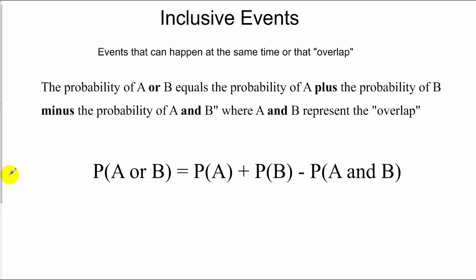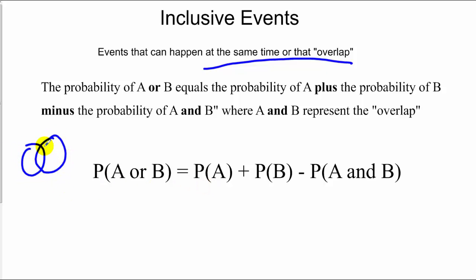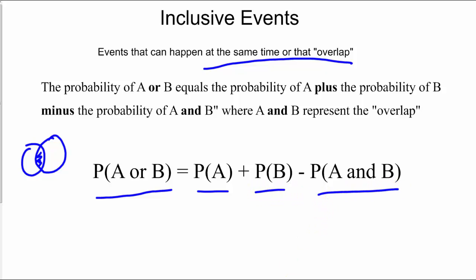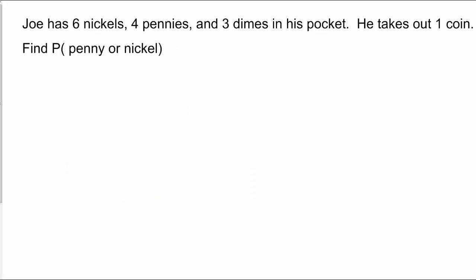For inclusive events, the probability of A or B — again 'or' means adding — but with inclusive events there's an overlap, something that can occur in both sets. Like in Venn diagrams, if you include the overlap twice you'd have more items than actually exist. So for inclusive events, we add the two probabilities and subtract off the overlap: P(A) + P(B) − P(A and B).